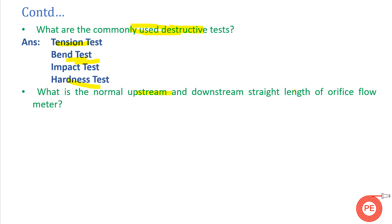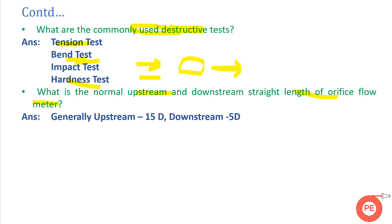What is the normal upstream and downstream straight length for an orifice flow meter? Upstream is the direction from which flow is entering, and downstream is where it exits. To provide an accurate reading, there must be sufficient straight pipe distance because bends or walls can cause flow fluctuations, giving incorrect readings. The upstream length is kept at 15D and the downstream length at 5D, where D is the pipe diameter.